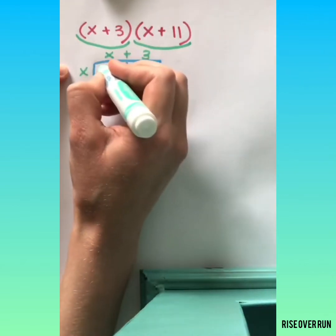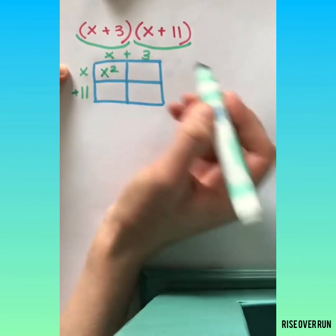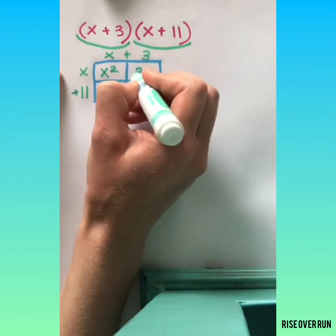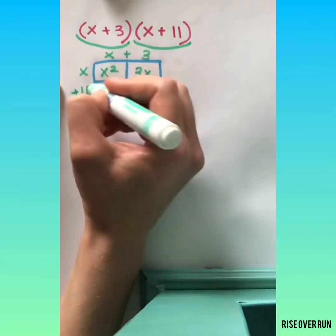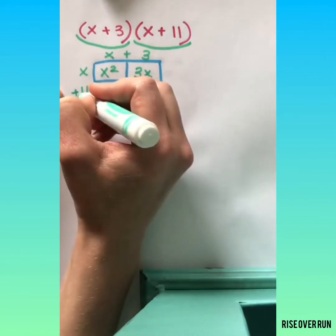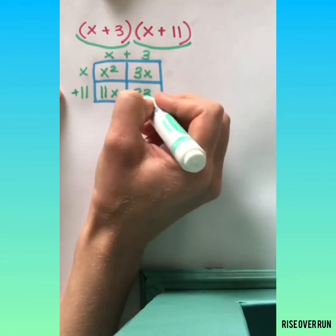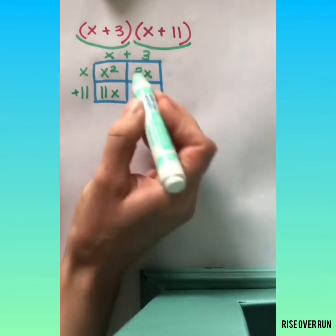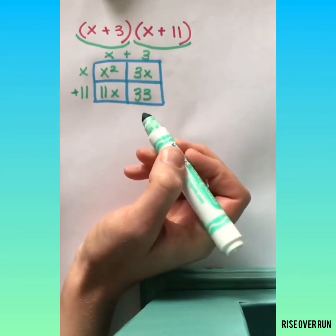x times x is x squared. 3 times x is 3x. 11 times x is 11x and 11 times 3 is 33.